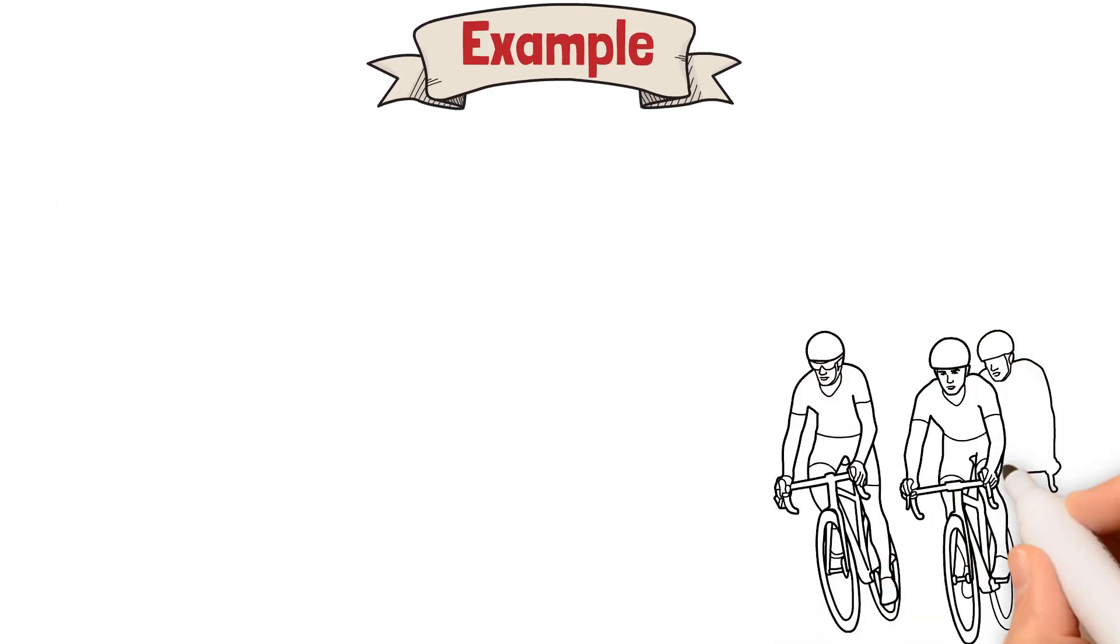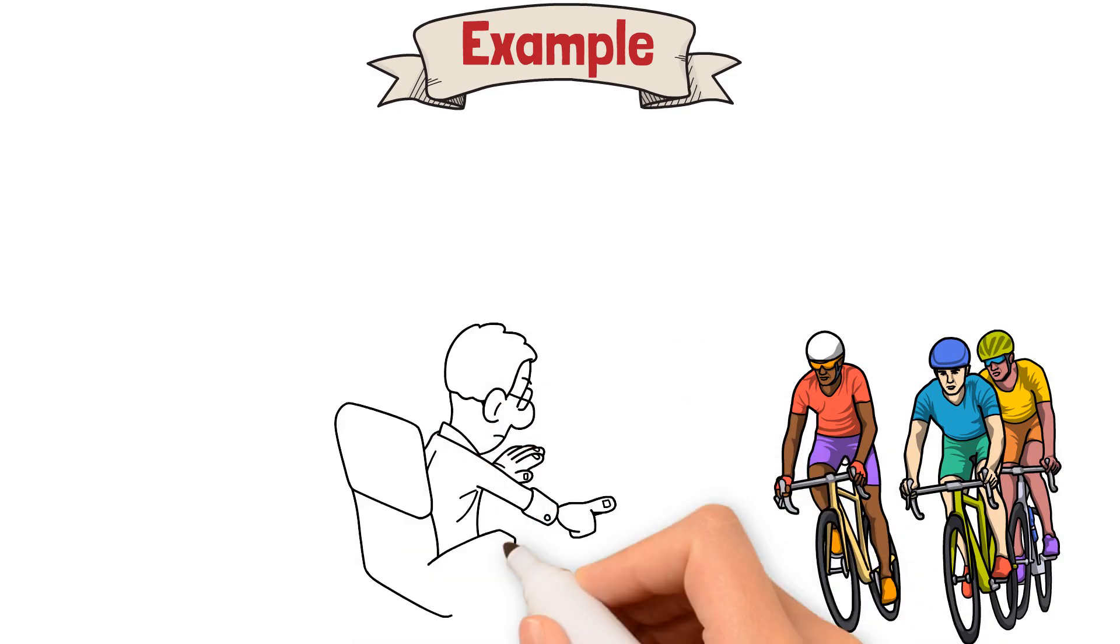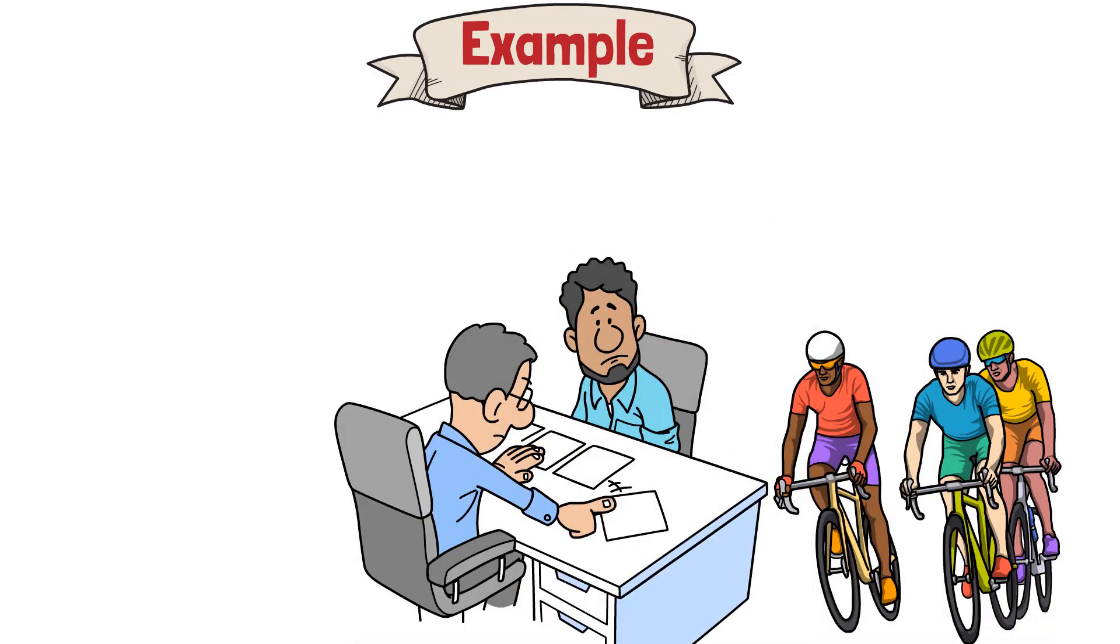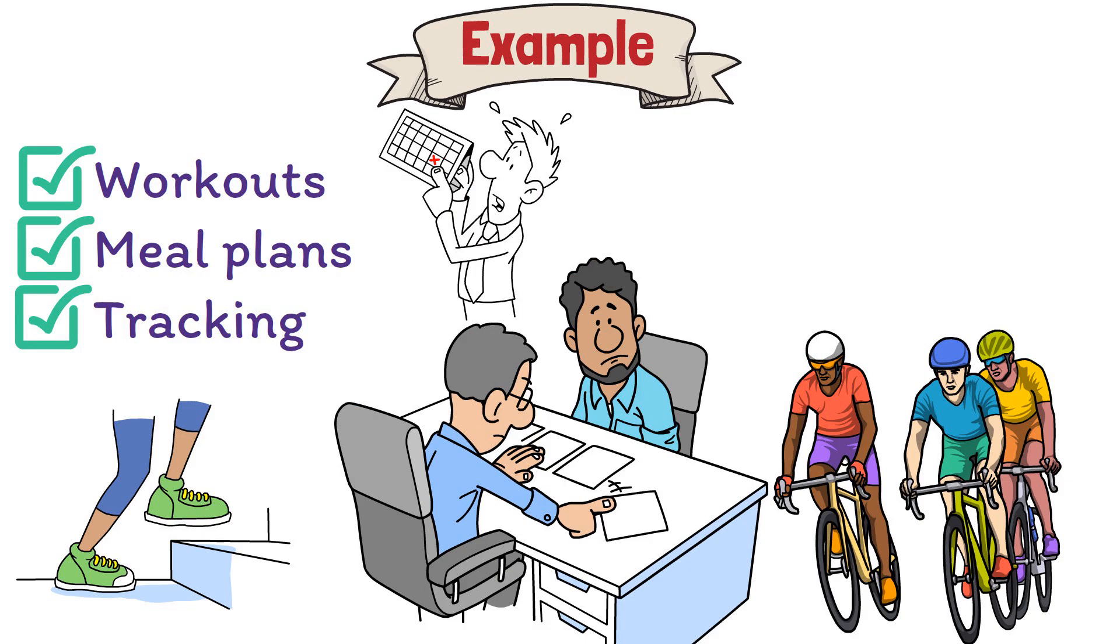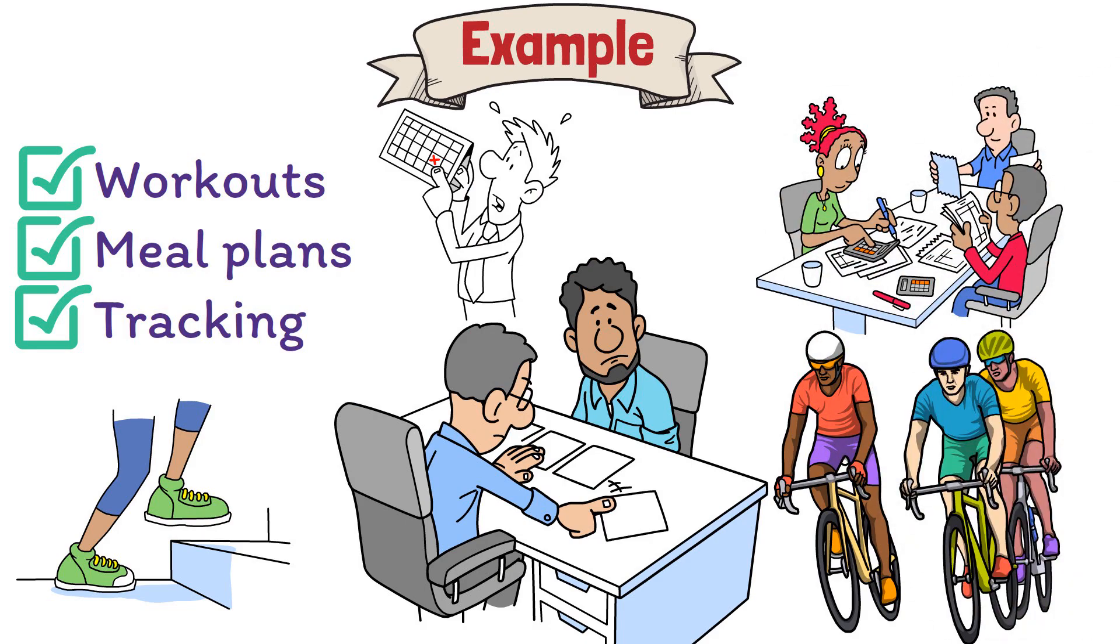Our example. Imagine a team working on a fitness app. Instead of launching with every possible feature—workouts, meal plans, tracking—they start with one core feature—tracking daily steps. This lets them validate demand before adding more complexity.